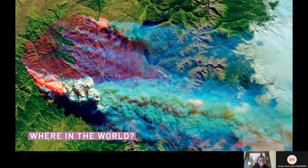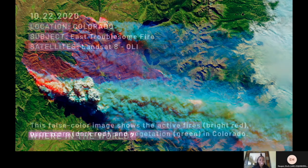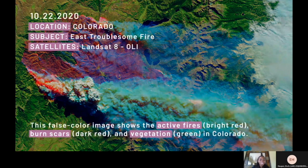This image is an example of some of the Earth observation data NASA collects. It was taken on October 22nd and shows the active fires and burn scars from recent wildfires in California and Colorado. I hope you learned a lot more about Earth observations to kick-start your knowledge on studying how remote sensing and geospatial analysis can make a significant impact in making this world a better place to live in.